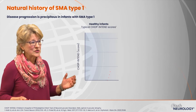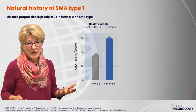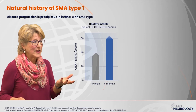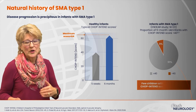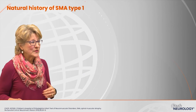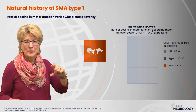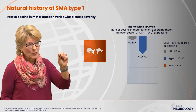There is a test called the CHOP INTEND, which was designed to assess babies with spinal muscular atrophy. The majority of children with type 1 SMA do not achieve a score of 40, whereas healthy babies by six months of age have topped out at the maximum score of 64. Looking at the rate of motor decline, it varies with disease severity — patients with a milder phenotype have a somewhat slower rate of decline than those with a more severe phenotype.